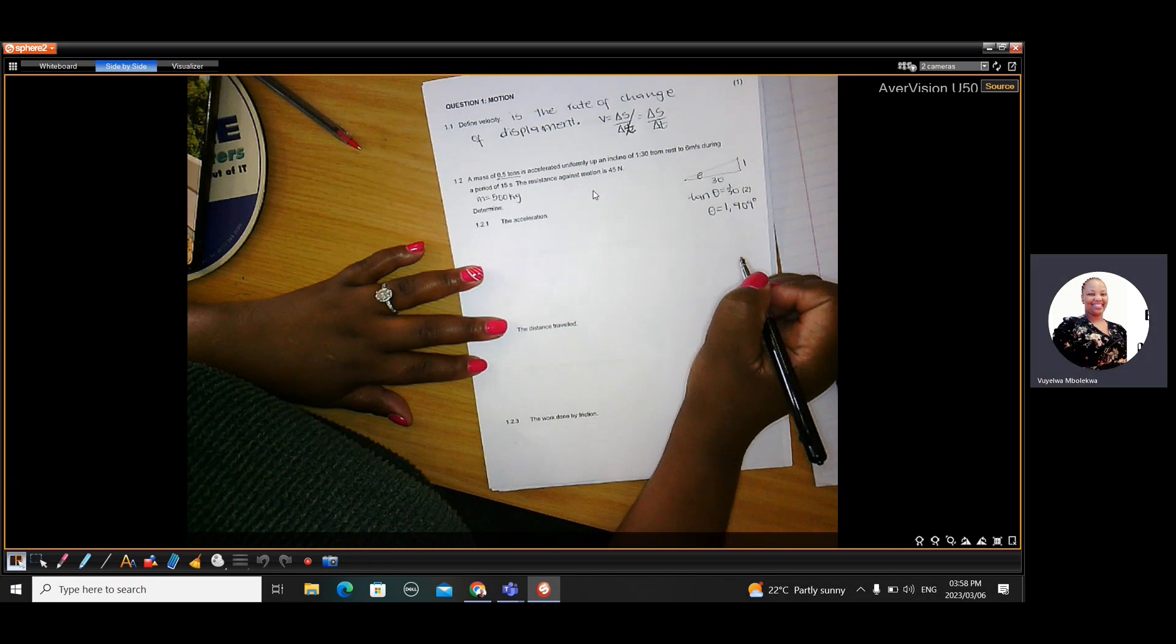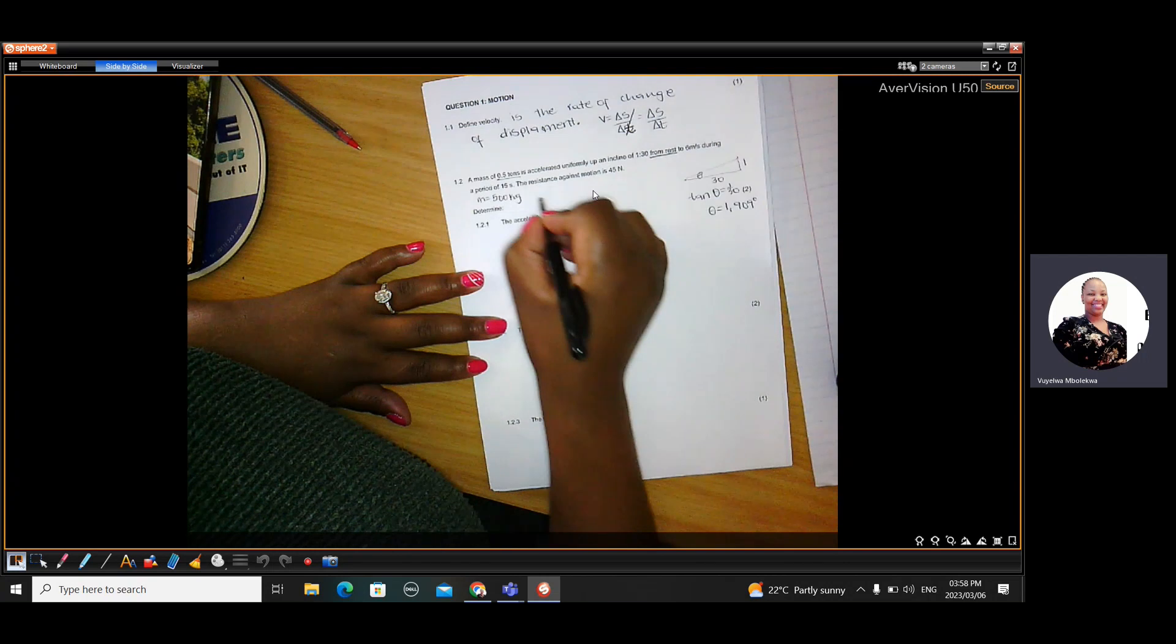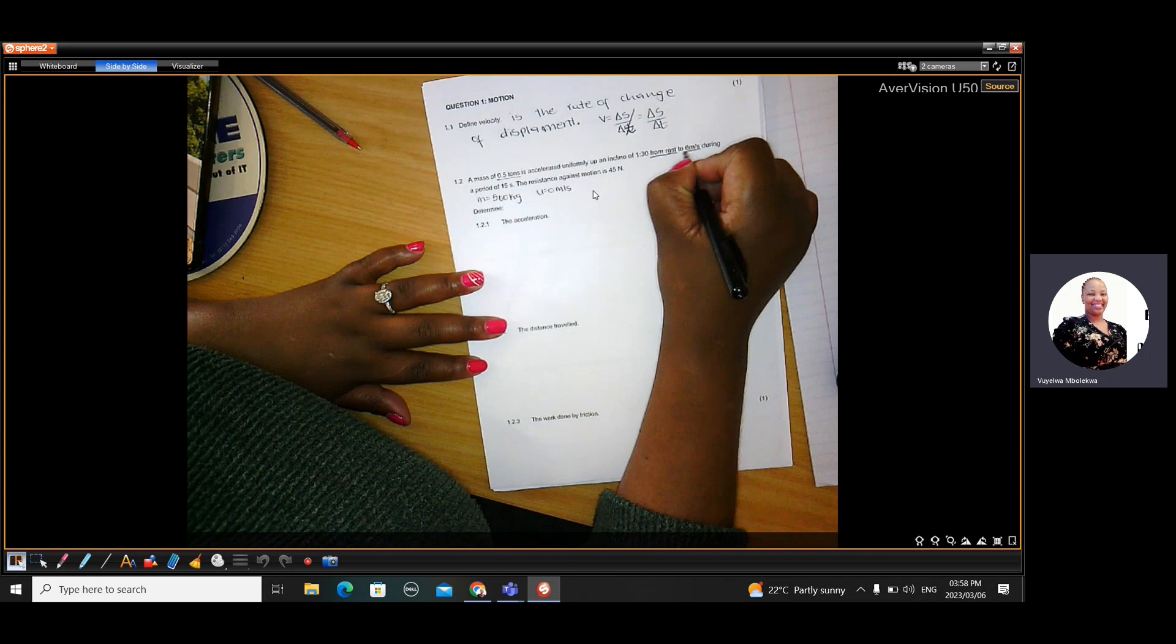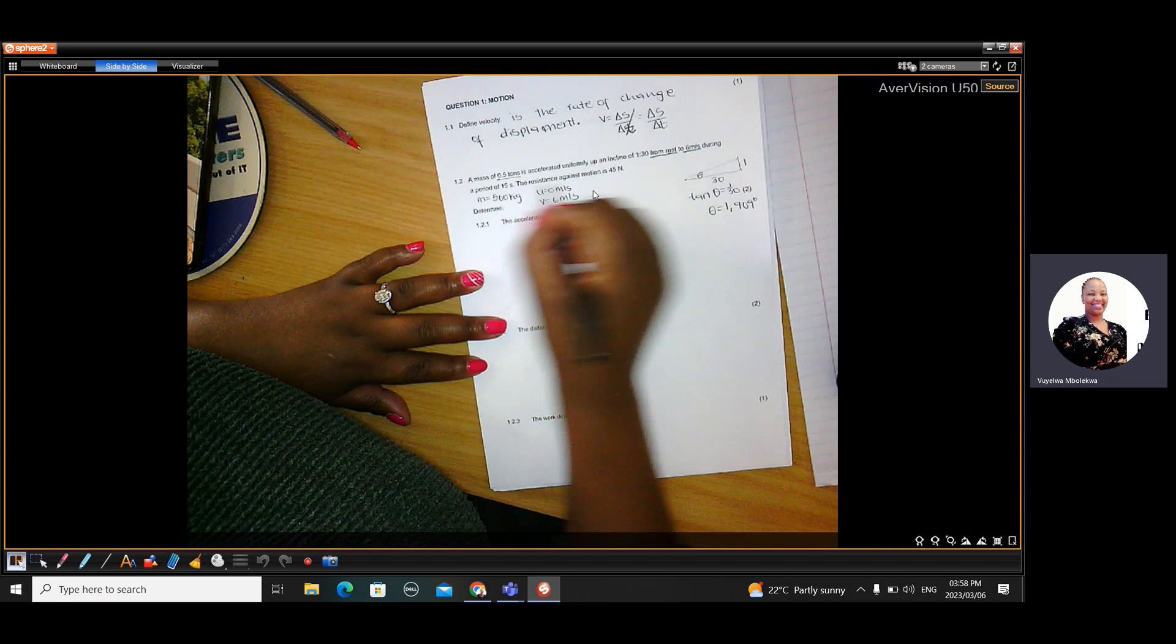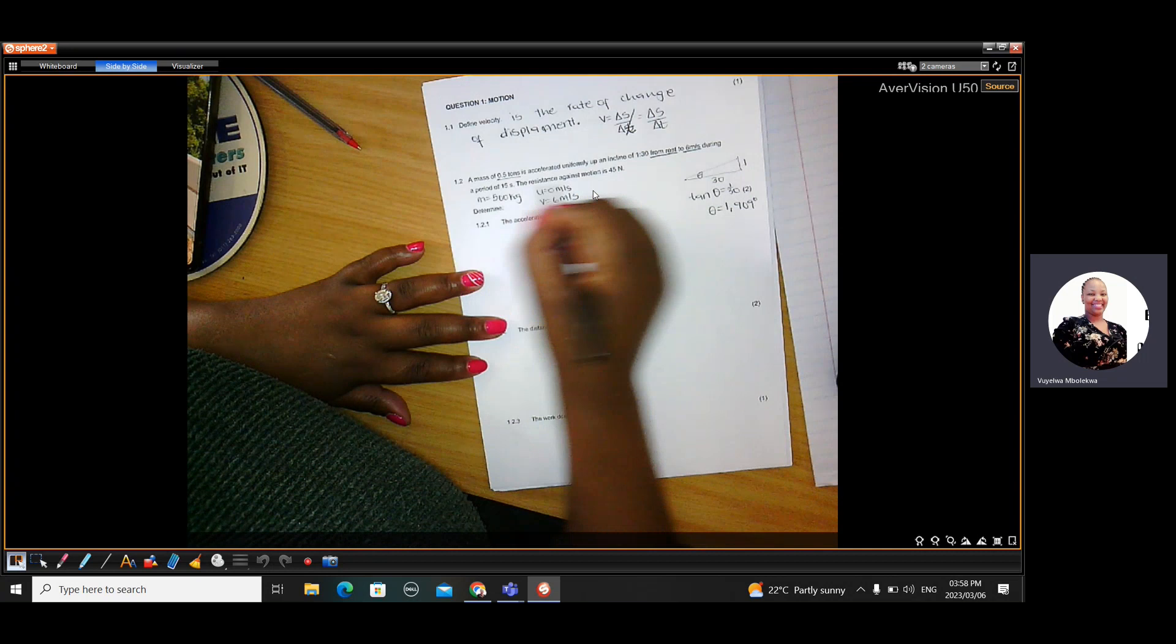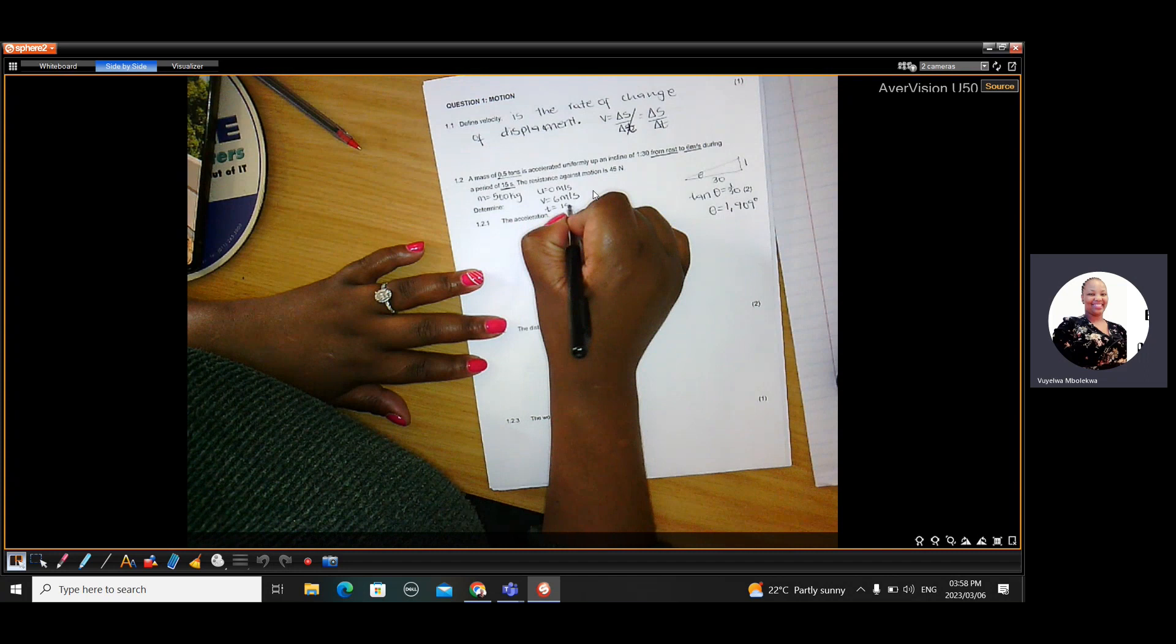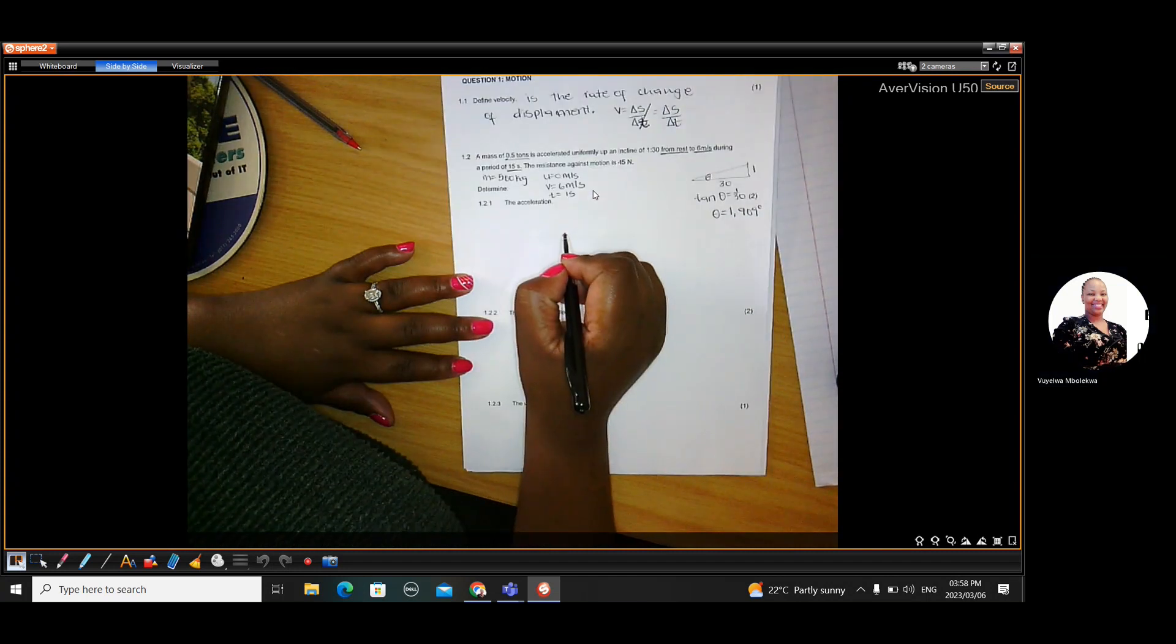And then it's traveling from rest, meaning U equals 0 meters per second to 6, which is V is 6 meters per second. And it does that during 15 seconds, which means time is 15. Then the question is looking for acceleration.